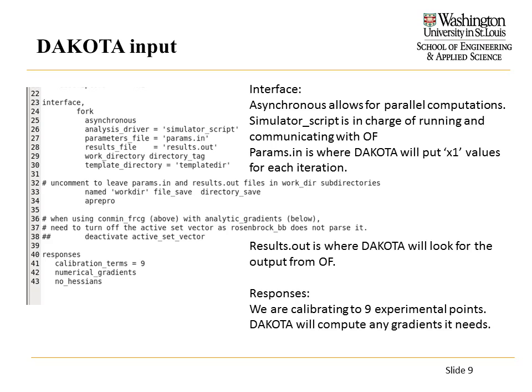I save each iteration folder. I'm calibrating against 9 experimental points on the CF graph. For gradients, DAKOTA will compute the numerical gradients — I could make my Python script compute the gradients and have DAKOTA read them in, but I'll let DAKOTA handle that.